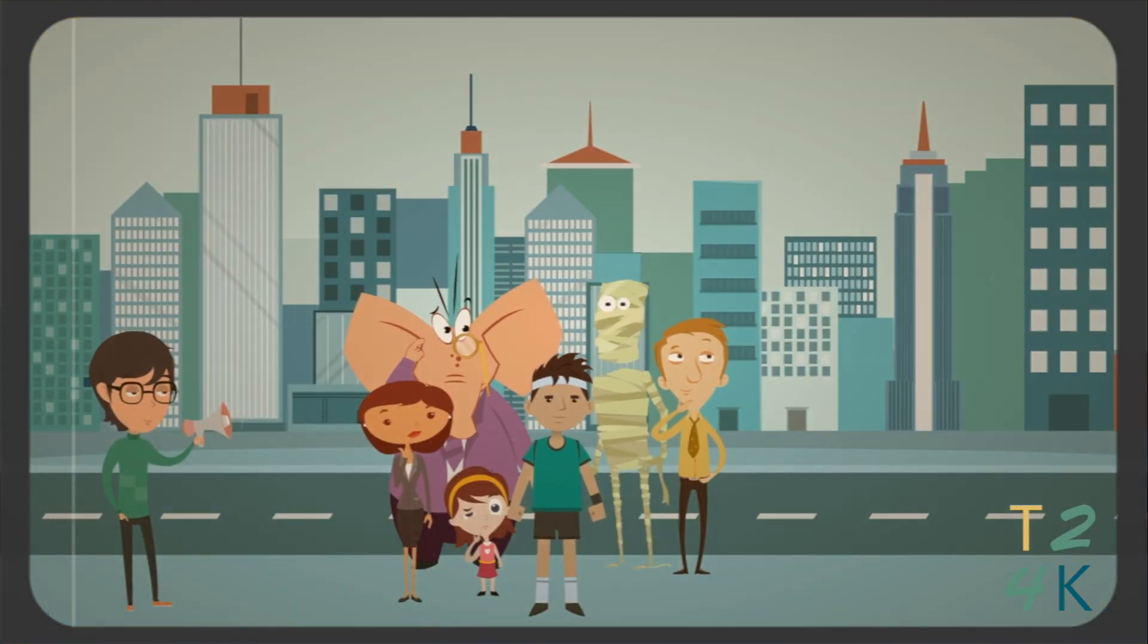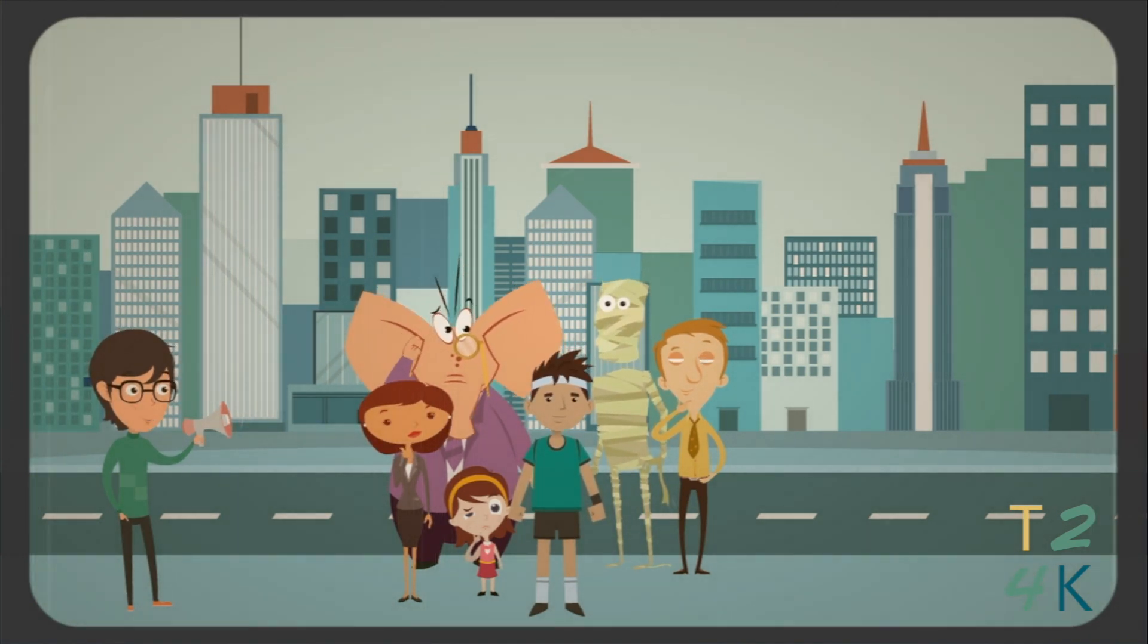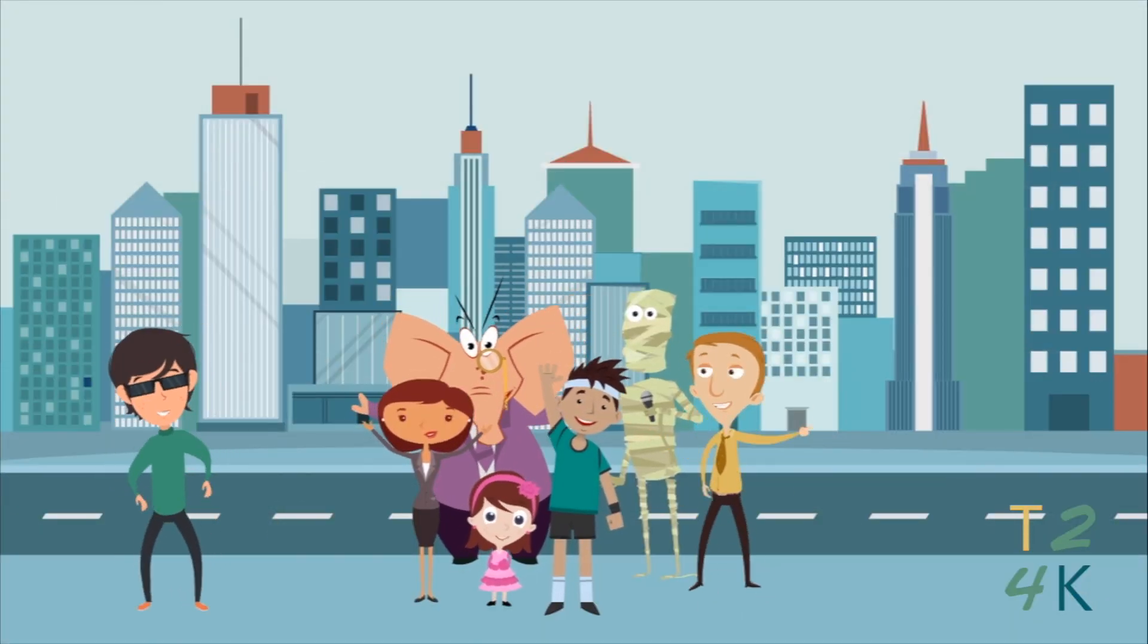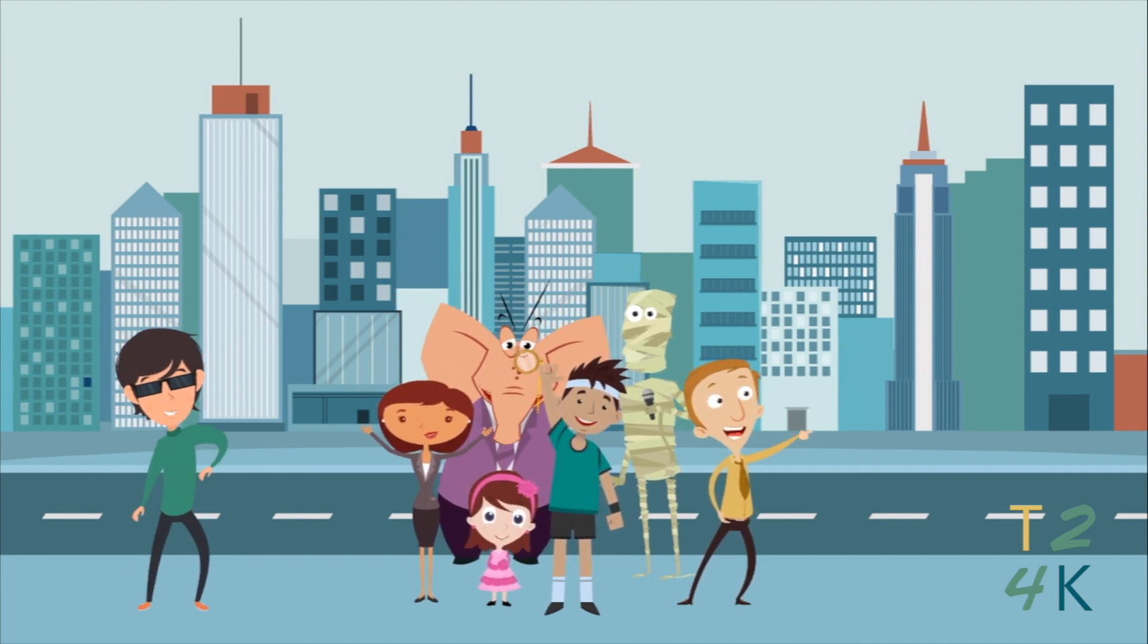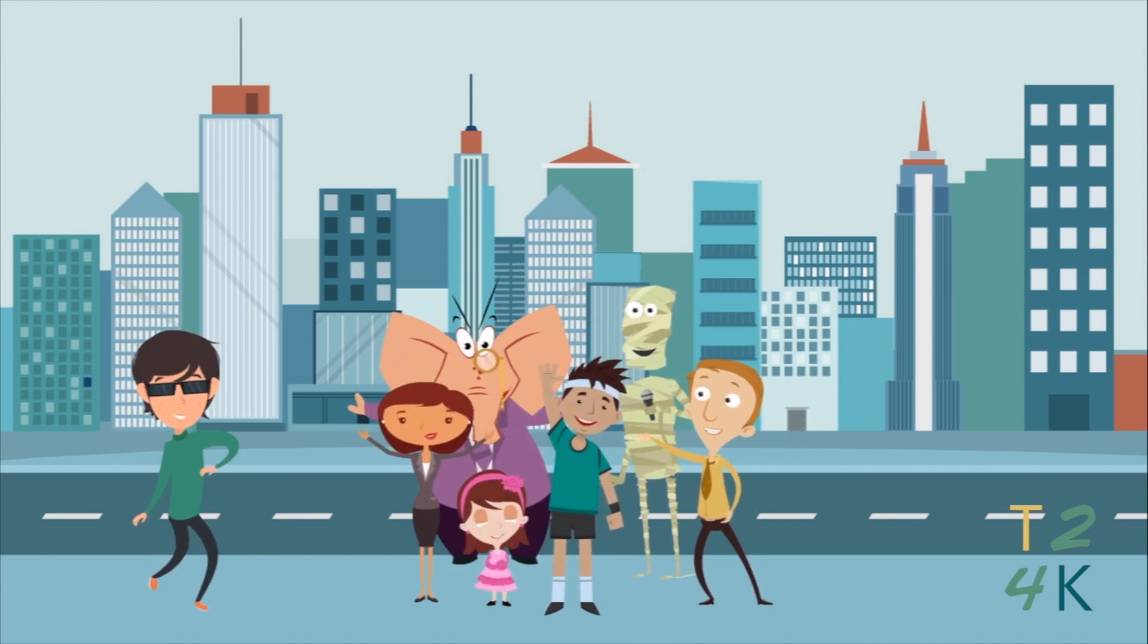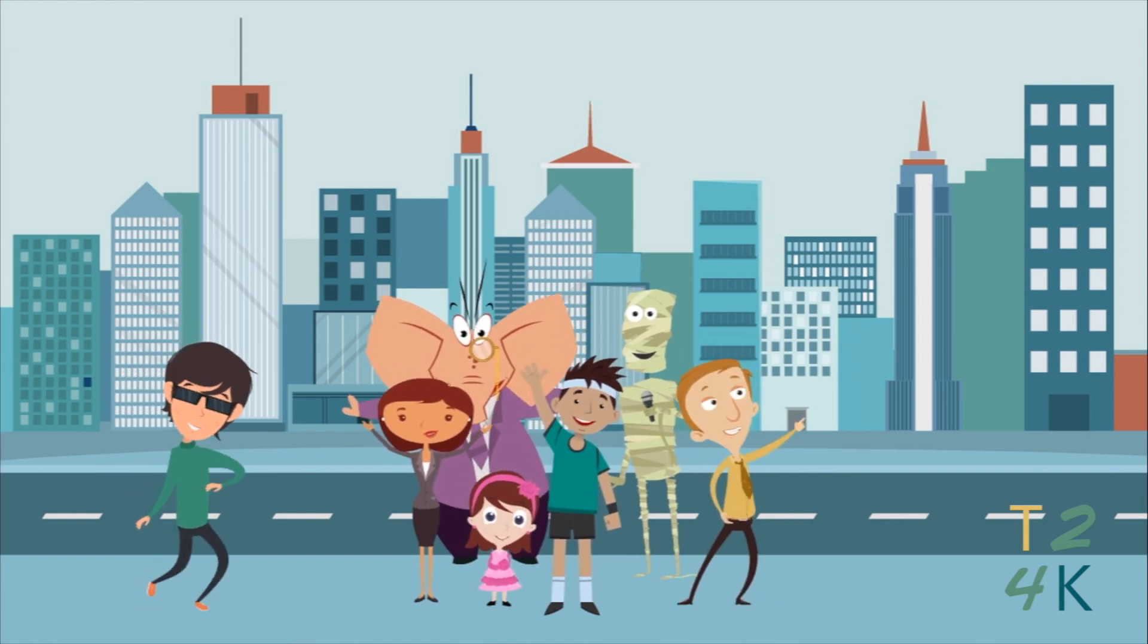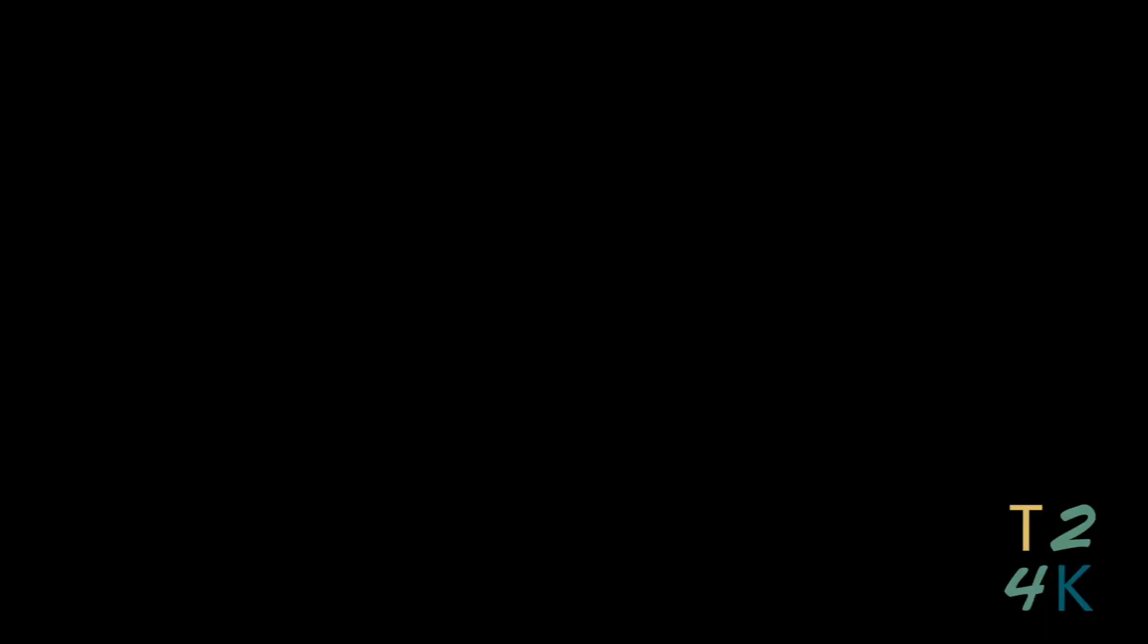Jonah finally made it to Nineveh. When he got there, he started telling the people how they had turned away from God and they needed to repent. When the king heard this, he knew his people really had turned from God, and they started to change. With this new message of God, the people celebrated and wanted to honor him and follow his law.